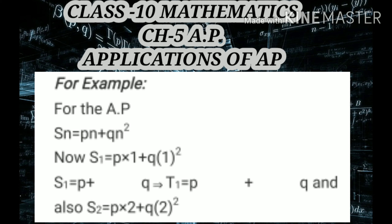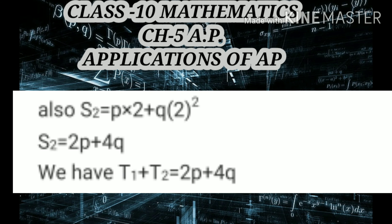We can find the sum of two terms by substituting the value of n = 2. So S_2 = P×2 + Q×2² = 2P + 4Q. Since S_2 is the sum of two terms, that means T1 + T2 = 2P + 4Q.